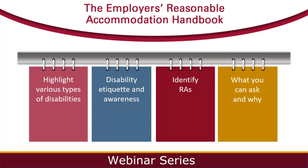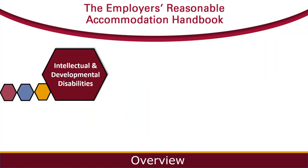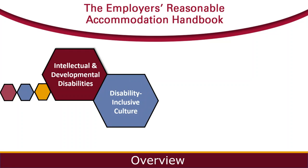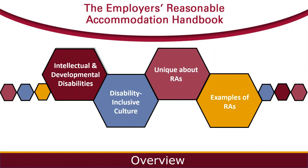Our sixth and final session will bring this information together with a focus on what you can ask, what you should do, and why, so employers feel better equipped to create workplaces that are inclusive of all employees, including employees with any type of disability. Today we are going to focus on intellectual disabilities. We will talk about what intellectual and developmental disabilities are, ways to create a disability-inclusive culture by sharing disability etiquette and awareness tips, and what is unique about providing reasonable accommodations specific to intellectual disabilities, as well as examples of reasonable accommodations.